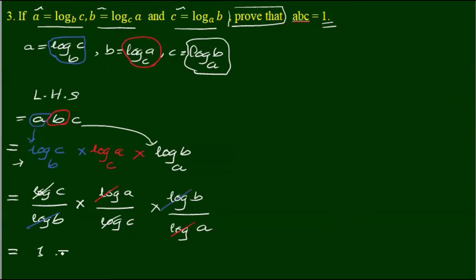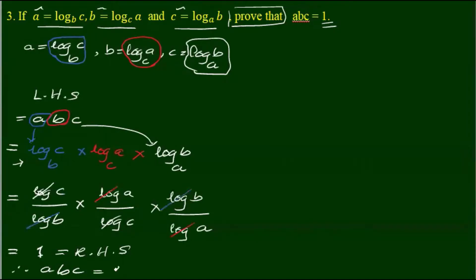We use the base value repeatedly. So we have to achieve the best result. Therefore, we have to achieve A times B times C equal to 1.